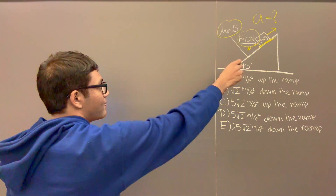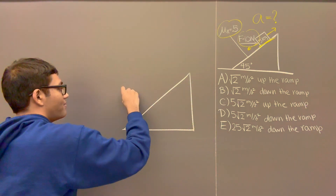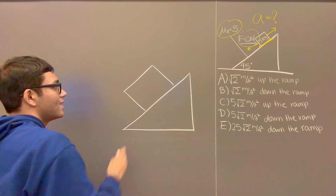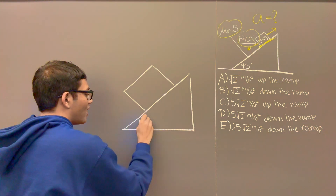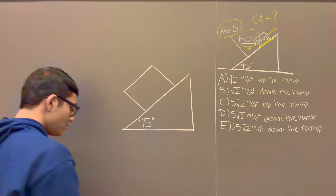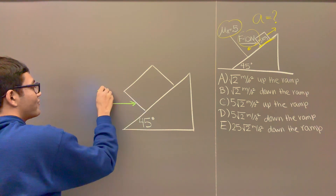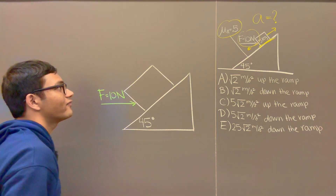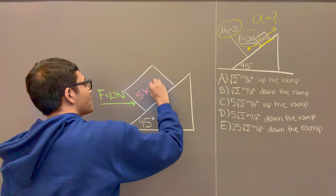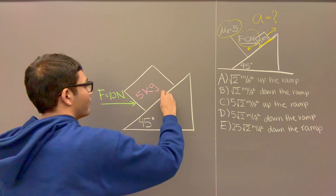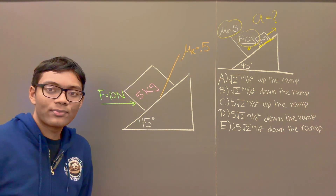The first thing I'm going to do is draw this picture bigger. The best thing you can do for yourself when solving physics problems is draw a large diagram. So here's our picture magnified — we've got our 45-degree inclined plane. Here is our applied force of 10 newtons, using different colors whenever possible. We've got a 5-kilogram box and friction characterized by the coefficient of kinetic friction μk = 0.5.